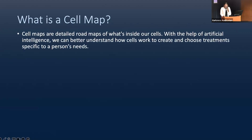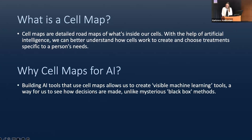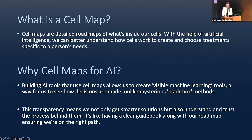One exciting way that cell maps have been used by our collaborators is to build visible neural networks to predict drug response in cancer. The visible neural network approach provides a level of transparency which can't be achieved in traditional black box AI, and it allows users to leverage the cell map to explain why a drug response prediction is being made.